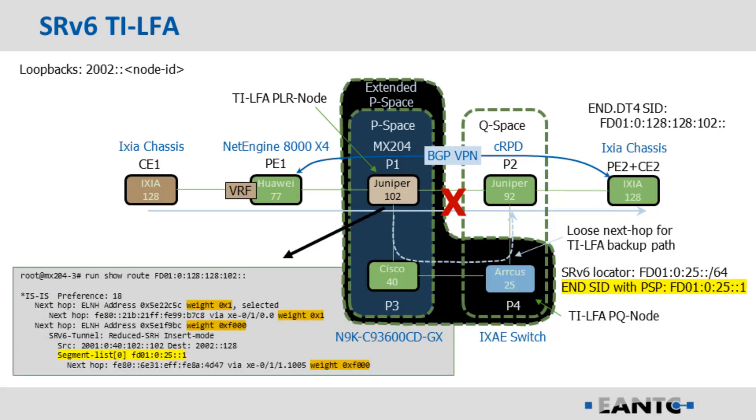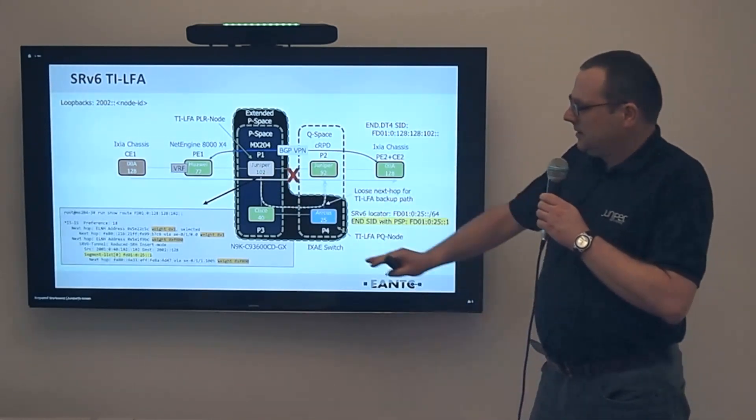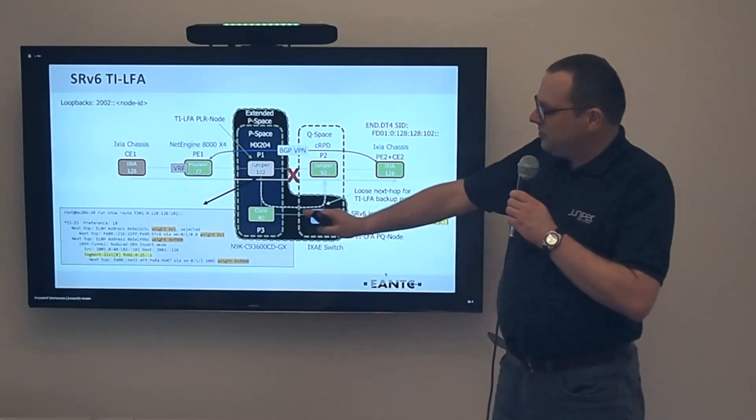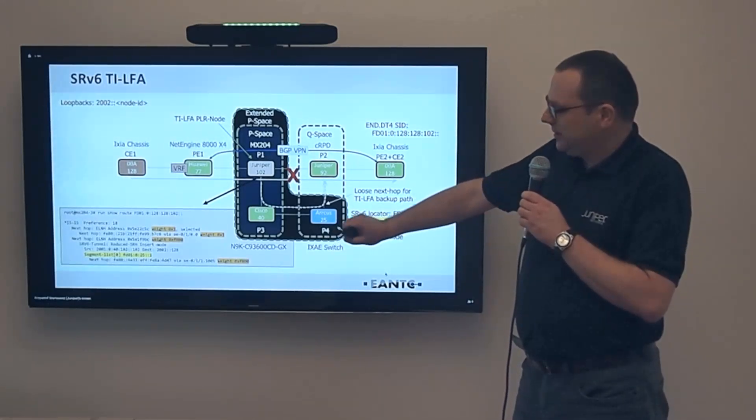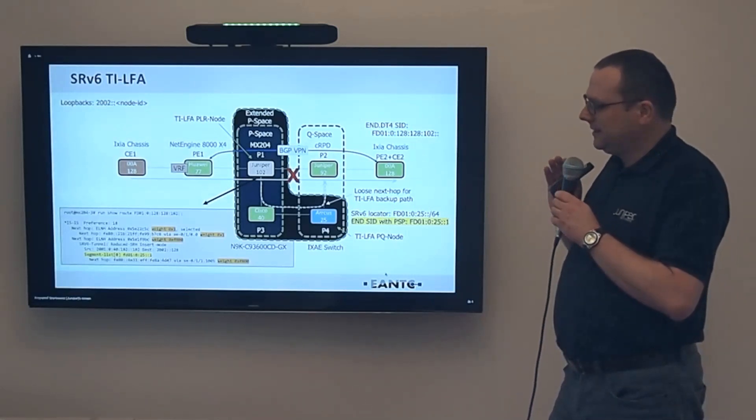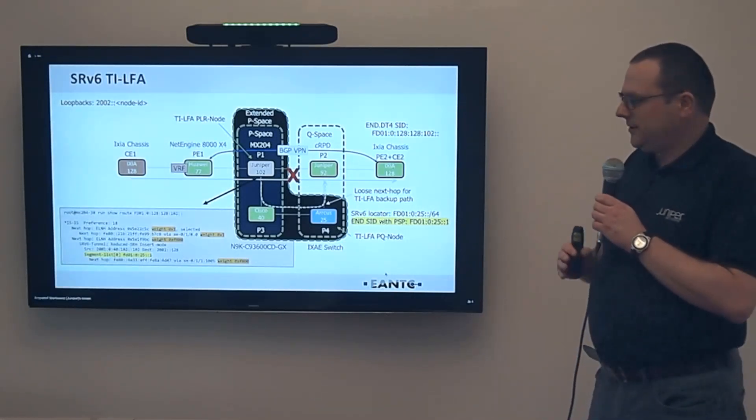Fortunately, there is something called enhanced P-SPACE. What is enhanced P-SPACE? Enhanced P-SPACE is something similar to the P-SPACE, but from the point of view of the neighbors of the PLR. Here the neighbor of the PLR is Cisco 40. This is a directly connected neighbor of PLR. From Cisco 40 we can reach Arcus 25 without crossing the failed link. Which means that our PQ-node including enhanced P-SPACE is Arcus 25.